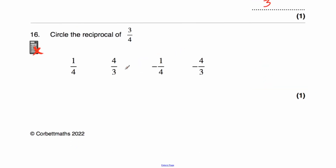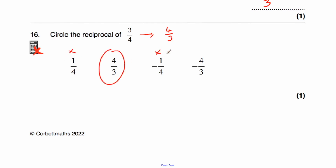Question 16: circle the reciprocal of 3 quarters. Flipping 3 quarters over gives 4 thirds. Our options are: 1 quarter — no; 4 thirds — yes; minus 1 quarter — no; and minus 4 thirds — no. So the answer is 4 thirds.